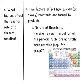Our fourth question is: what factors affect the reaction rate of a chemical reaction? How can we speed up or slow down chemical reactions? Remember, the reaction rate is just how quickly the reactants go to products. We're going to look at five factors that affect how quickly or slowly reactants are turned into products.